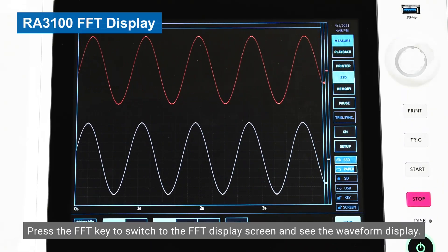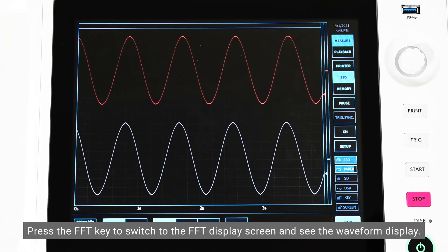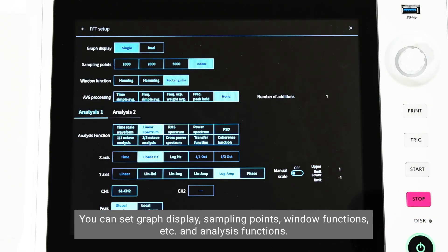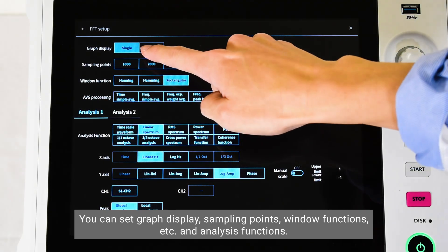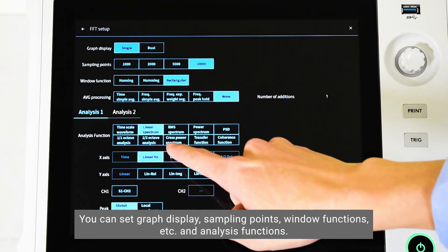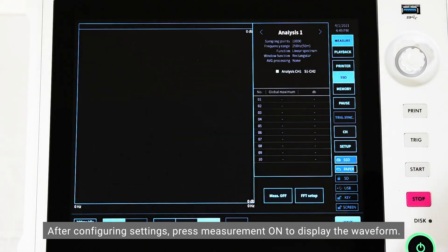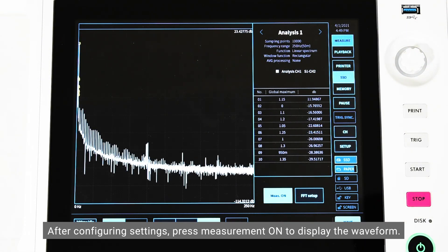Press the FFT key to switch to the FFT display screen and see the waveform display. Various settings can be set with the FFT setting key. You can set graph display, sampling points, window functions, and analysis functions. After configuring settings, press measurement on to display the waveform.